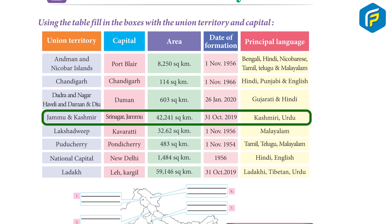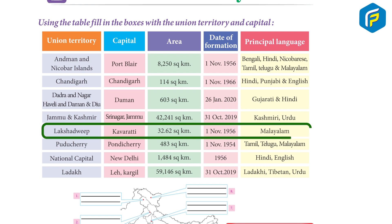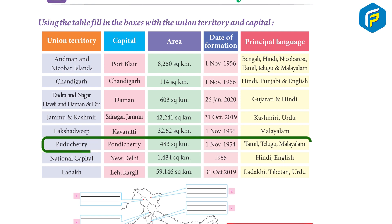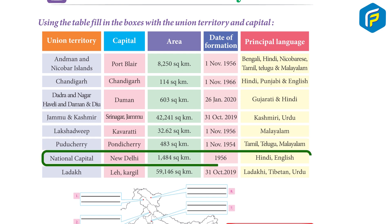Jammu and Kashmir: capitals Srinagar and Jammu, area 42,241 square kilometers, formed 31 October 2019, language Kashmiri and Urdu. Lakshadweep: capital Kavaratti, area 32.62 square kilometers, formed 1 November 1956, language Malayalam. Puducherry: capital Pondicherry, area 483 square kilometers, formed 1 November 1954, languages Tamil, Telugu, and Malayalam.